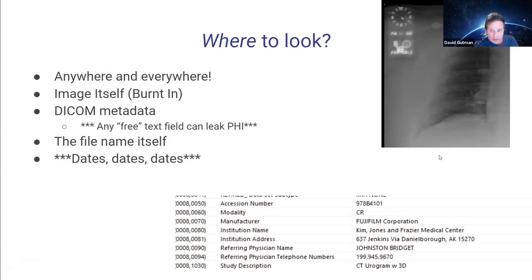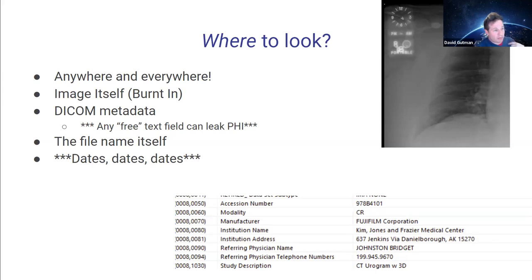The real challenge in de-identification is where to look — unfortunately the answer is anywhere and everywhere. The image itself can actually have PHI. Besides the face, on X-rays there could be a metal tag or dog tag on someone. Obviously not a metal dog tag in an MRI, but in a CT image there could be some piece of physical jewelry that may have a personal identifier.